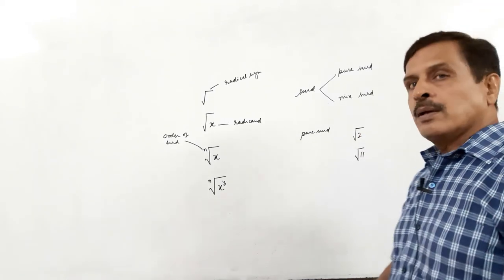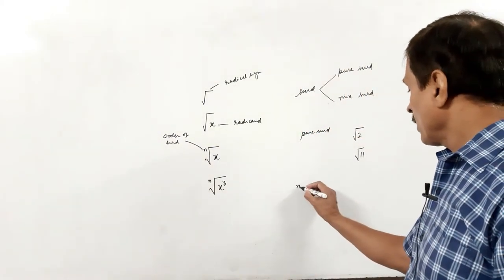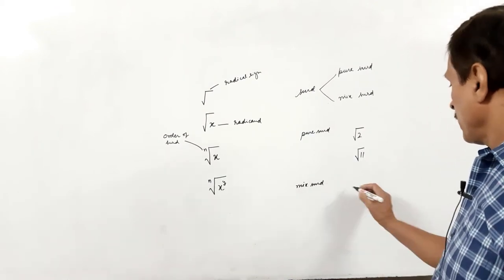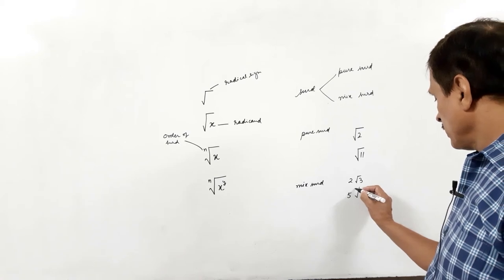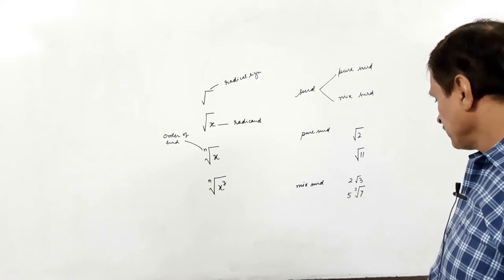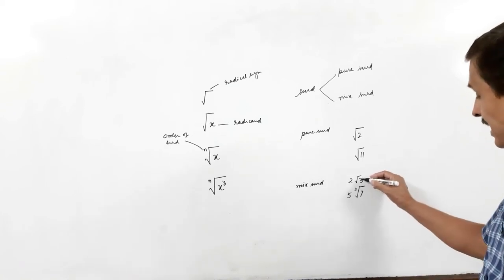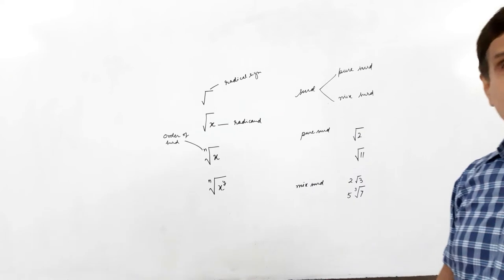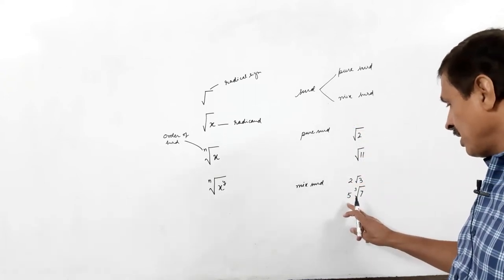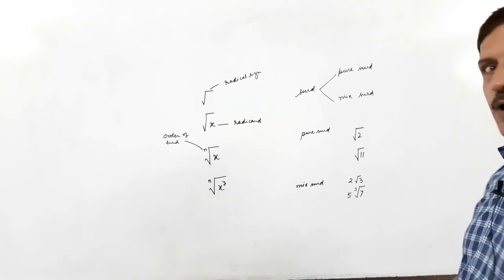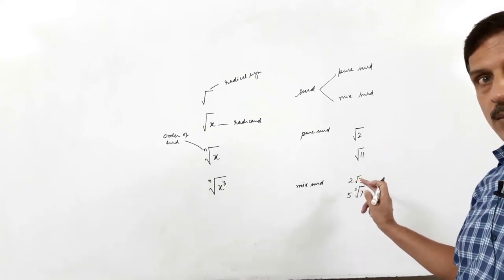In the case of a mixed surd, a rational part is also present outside the radical sign. For example, 2 root 3, or 5 times cube root of 7. So the rational part is outside the radical sign and inside the radical sign is the irrational radicand. Here 5 is the rational number and cube root of 7 is the irrational part. Note that 2 root 3 means 2 multiplied by root 3. Also, if it is only a square root, the order need not be written, but higher orders must be specifically mentioned.